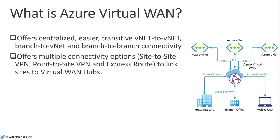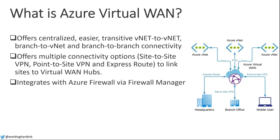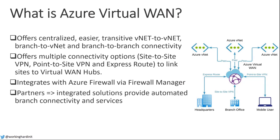To connect your on-premises infrastructure or mobile users, you could use site-to-site VPNs, point-to-site VPNs, or ExpressRoute — all available. Since around July 1st, it integrates with Azure Firewall Manager, so you can configure an Azure Firewall. There are many partners signing up to use this technology to help you integrate your on-site locations into the Azure Virtual WAN.